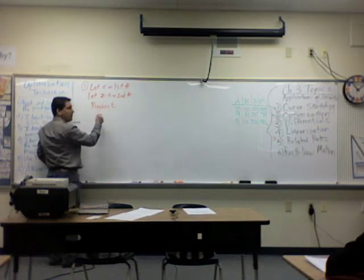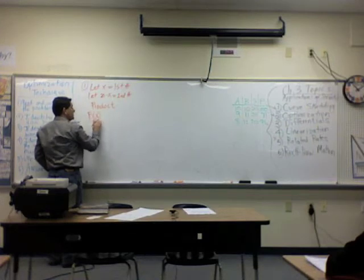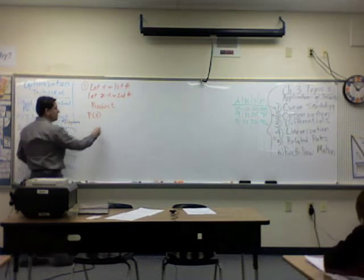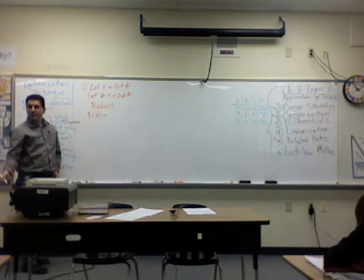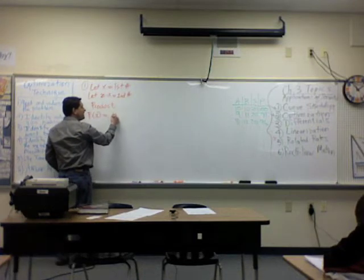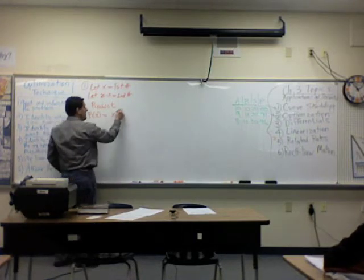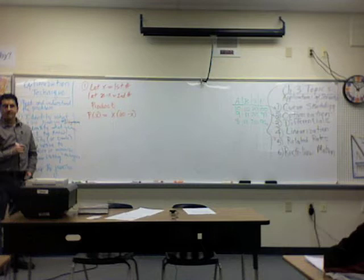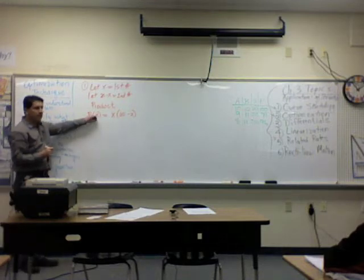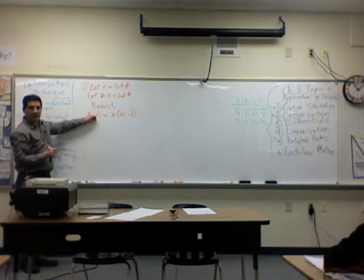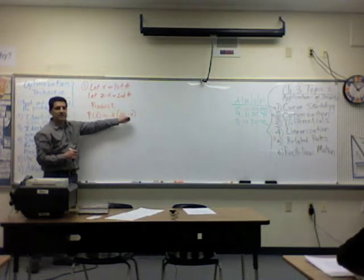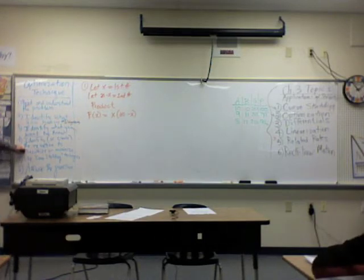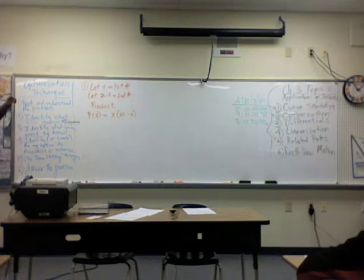I'm going to create an equation and call it P of x — P stands for product — and we're going to have x's in it. The product comes from multiplying the two numbers together. x is the first number and 20 minus x is the second number. I just created an equation called P, and it comes from taking the first number times the second number. That's the equation we're going to try to maximize — find the maximum.